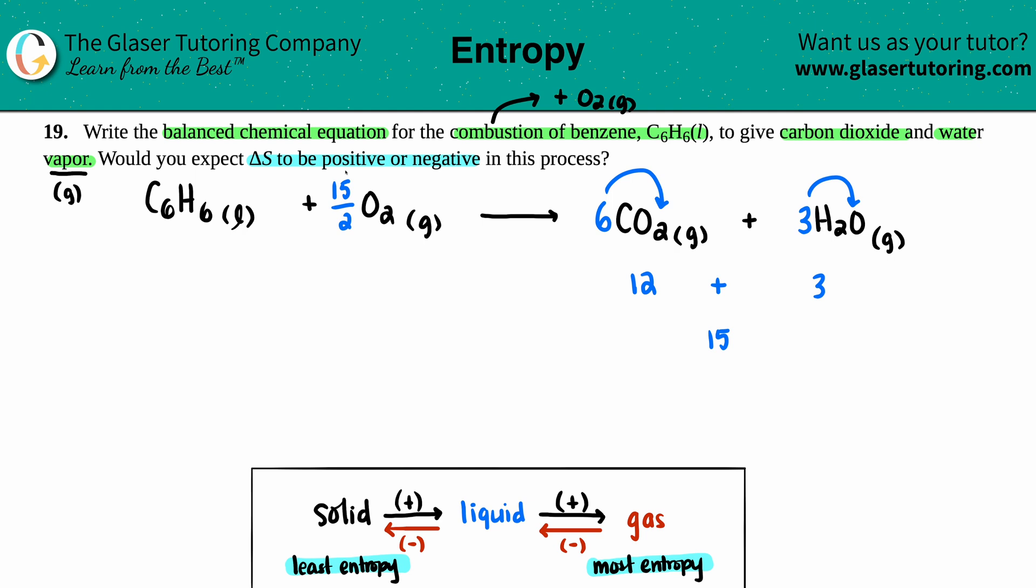You can keep this as a fraction, but if you don't want to keep it as a fraction you could always multiply the whole equation by the denominator. So if I just times this whole thing by two, I have to just change all the coefficients times by two. So instead of one C6H6, I'll have 2 C6H6s. 15 over 2 times 2 is 15. 6 times 2 is 12, and then 3 times 2 is 6. Okay cool, that's our balanced equation.